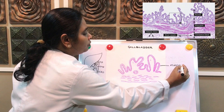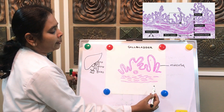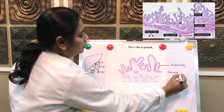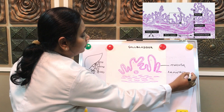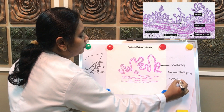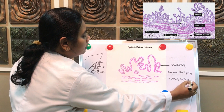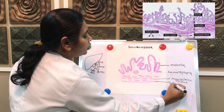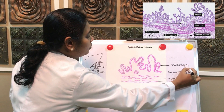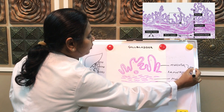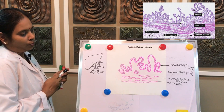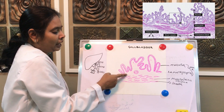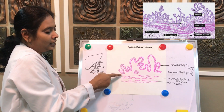The three layers of the gallbladder are: first, the mucosa — the innermost layer — resting on the lamina propria; second, the muscularis externa or muscularis propria; and third, the serosa. So the gallbladder is made up of only three layers: mucosa resting on the connective tissue layer called lamina propria, then muscularis externa, then serosa.